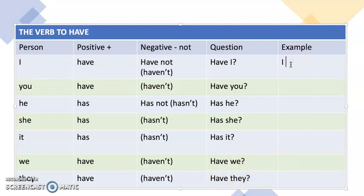Let's have an example: I have two cats. You have a dog. He has children. She has friends.